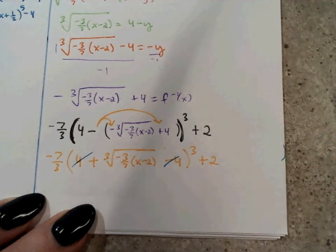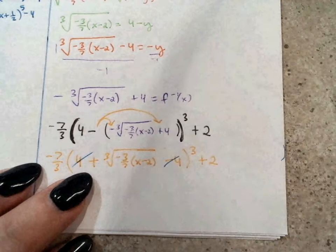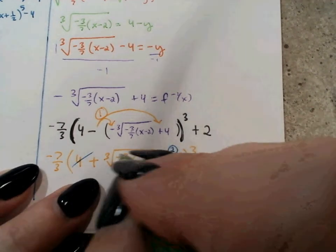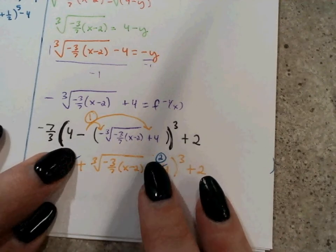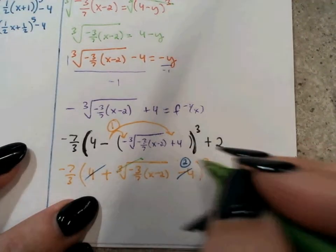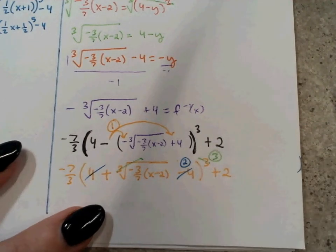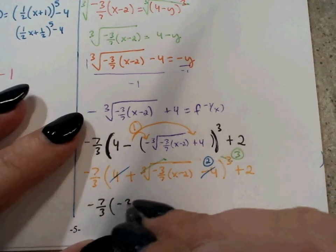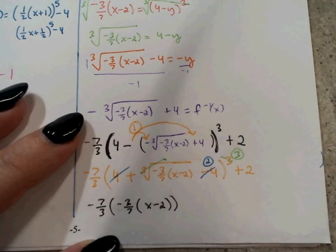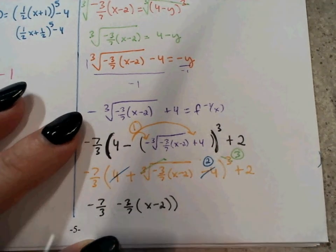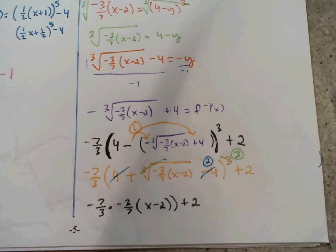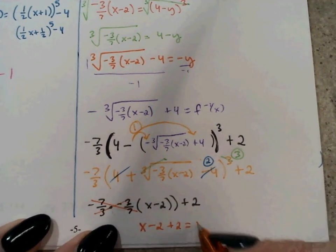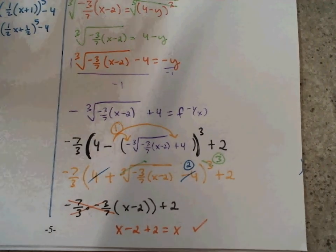So I can see the 4s simplify each other out. Once they're gone, I've got a cubed root being raised to the 3rd power inside, so the cubed root and the 3rd power cancel. Now I'm left with negative 7 thirds times negative 3 sevenths times x minus 2, plus 2. These two coefficients are reciprocals of each other, and negative times negative is positive, so they cancel to 1. That leaves x minus 2 plus 2, which is just x. They are inverses.